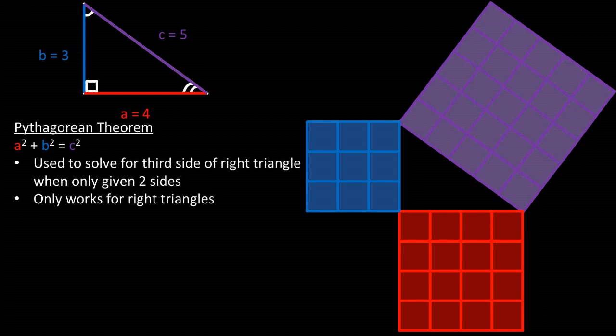Now let's solve the triangle as if we are only given the a and b lengths. Plugging the a value of four and the b value of three into the equation, we are left with four squared plus three squared equals c squared. Four squared plus three squared equals 25, so c squared equals 25.